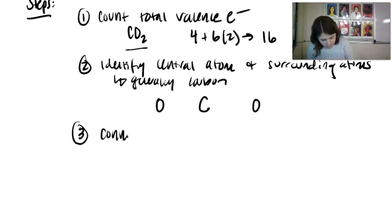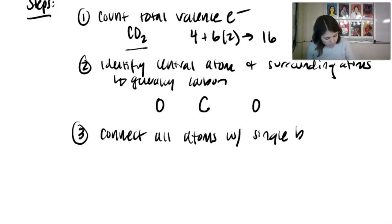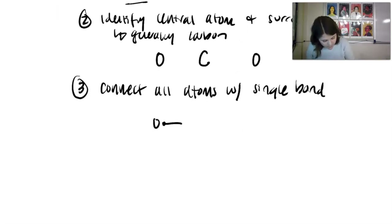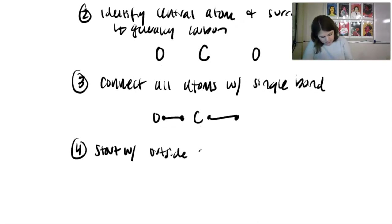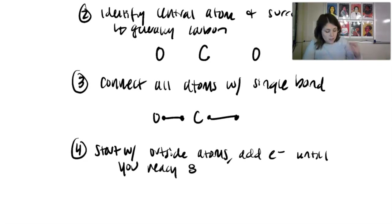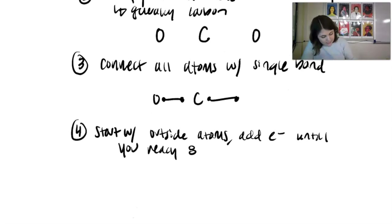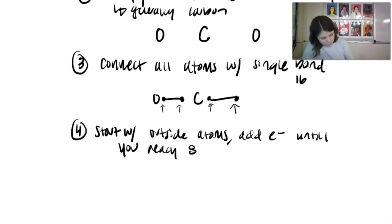Step three: connect all atoms with a single bond first. For CO2, we draw single bonds between carbon and each oxygen. Since there are now two bonds and each bond uses two electrons, we subtract four electrons from our total of 16, leaving 12 to work with.